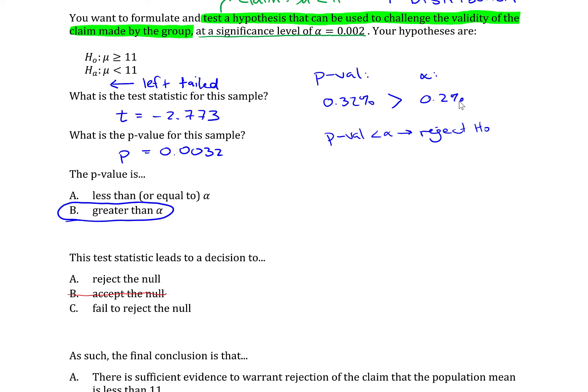So if your p-value is less than alpha, then you reject the null hypothesis. And what I remember here is if P is low, so if P is less than alpha, then the null must go. So reject the null hypothesis. So if P is low, the null must go. In this case, that's not happening. So if p-value is greater than alpha, we fail to reject the null hypothesis. So we'll check that.